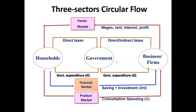In the three-sector economy, when talking about only these three sectors — household, business firm (those are manufacturers and service providers), and government — the factor market flow is the same: business firms give wages, rent, interest, and profit reaching towards the household. Households are purchasing goods and services, paying through the product market via consumption spending, and that is reaching towards the business firm.